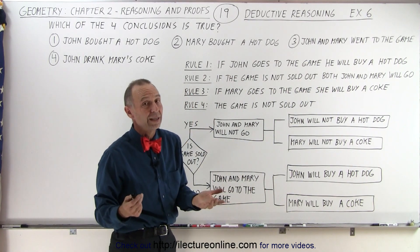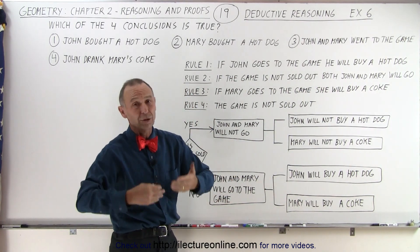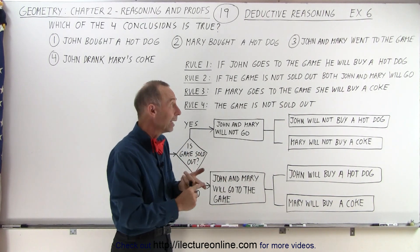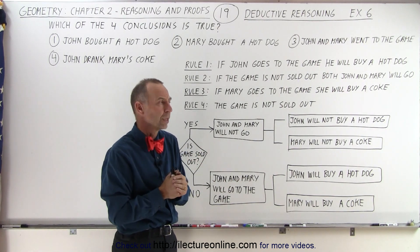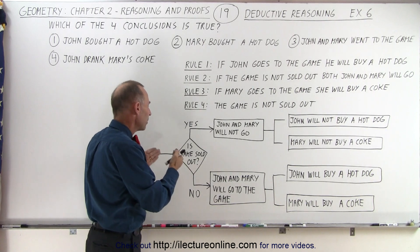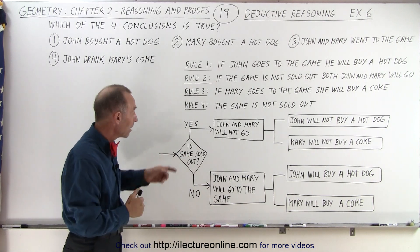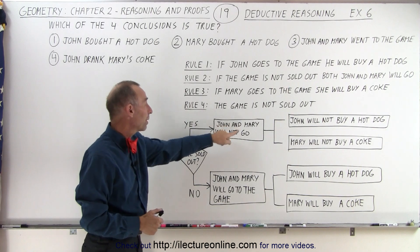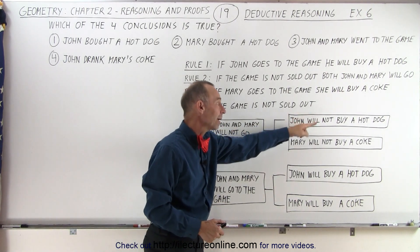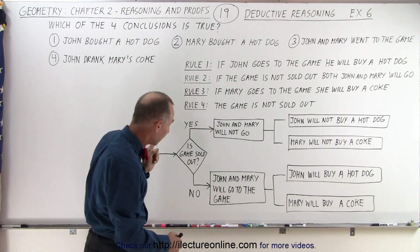Which means, if the game is sold out, they will not go, and if they don't go, then John can't buy a hot dog and Mary can't buy a Coke. So the first decision needs to be: is the game sold out? If the game is sold out, then John and Mary will not go, and therefore John will not buy a hot dog and Mary will not buy a Coke.